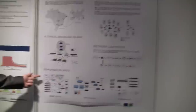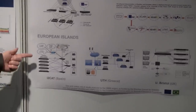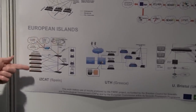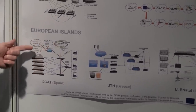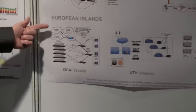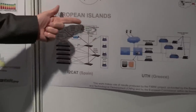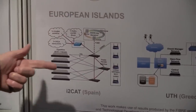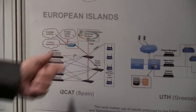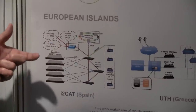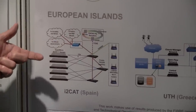There are three islands. One island is located in Aitokat. These islands are composed by several optical devices, electrical devices and wireless devices controlled by open flow resources.